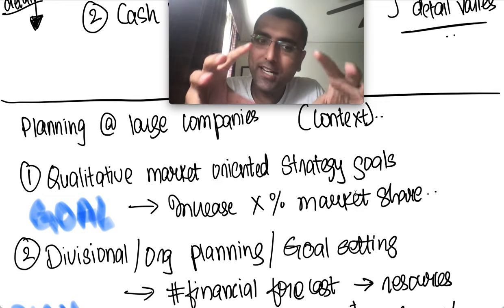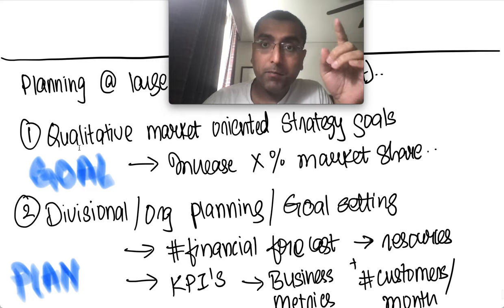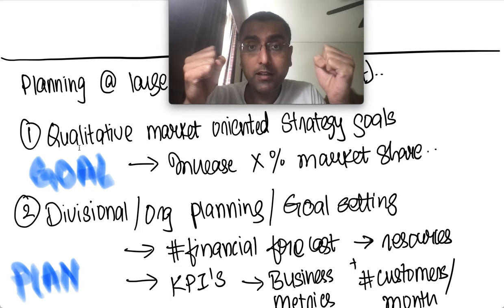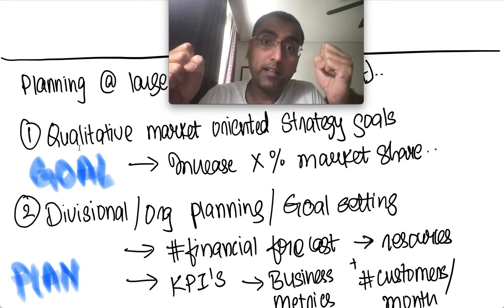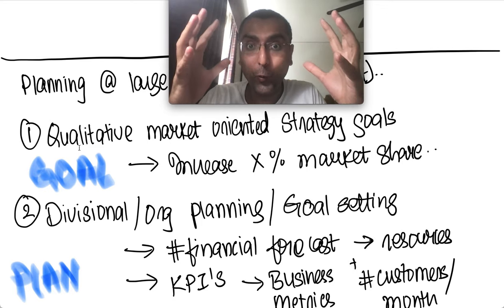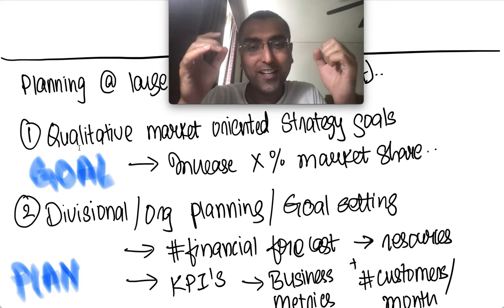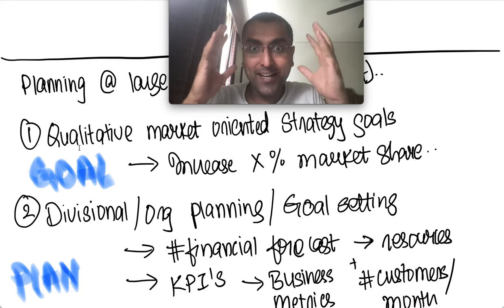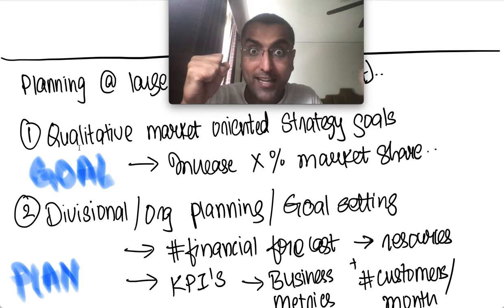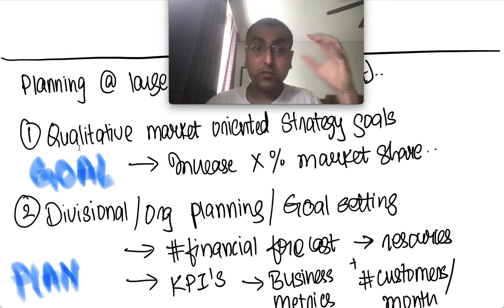In large and small companies alike, financial forecasting fits into a broader strategic context. The first step is the CEO, board, and executives deciding on strategy — for example, 'we need to become a dominant player and increase our market share.' It's abstract and goal-oriented. Just like a student saying 'I want to become a doctor' — that's the goal. Business leaders similarly set a target like 'I want to be the best in ed tech' and define a market share percentage by a specific year.